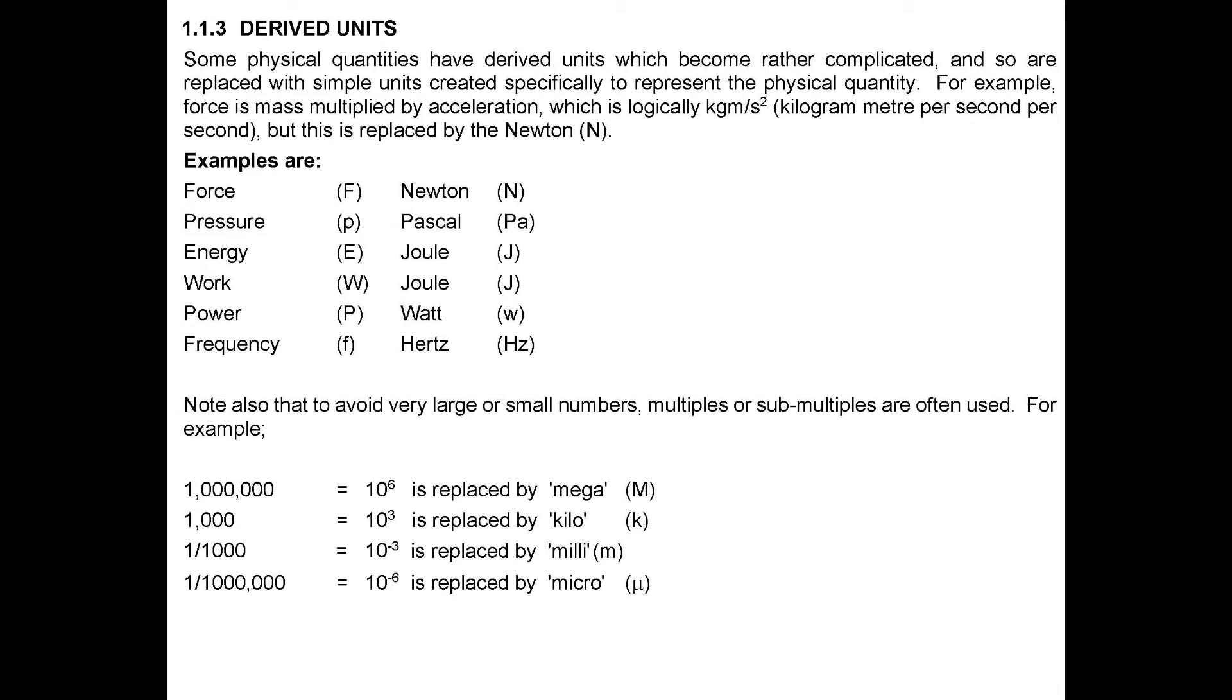Derived units. Some physical quantities have derived units which become rather complicated, and so are replaced with simple units created specifically to represent the physical quantity. For example, force is mass multiplied by acceleration, which is logically, kilogram meter per second per second, but this is replaced by the newton.